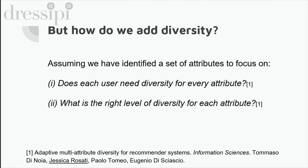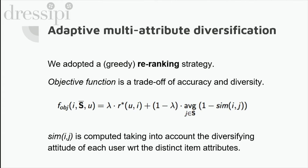These are the kinds of questions I came to answer with my research team at the Polytechnic University of Bari before joining this company. We were working from the assumption that an analysis of user behavior can uncover a more conservative attitude with respect to some attributes, and a need to explore different values of other attributes. This is what we found in the book and movie domains. I will briefly explain what we call an adaptive multi-attribute diversification approach, where adaptive means tailored to each user.